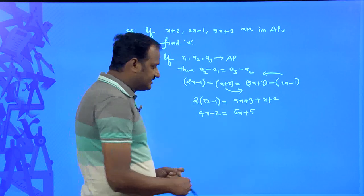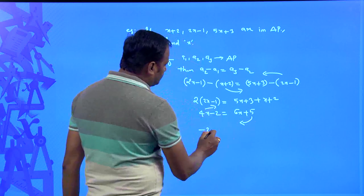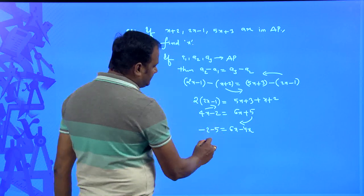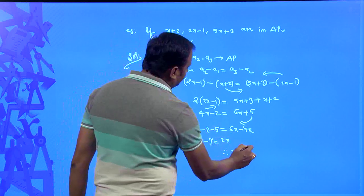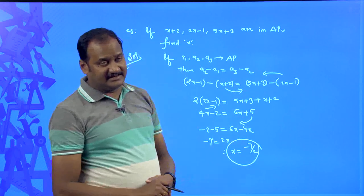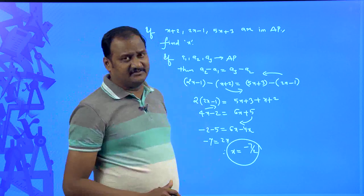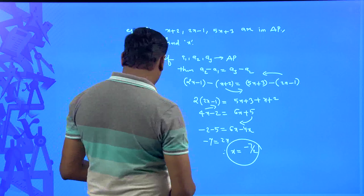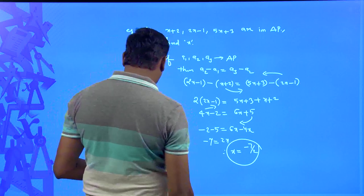Transposing terms: −2 − 5 = 6x − 4x, so −7 = 2x. Therefore x = −7/2. This way we can easily answer problems using the definition of arithmetic progression.